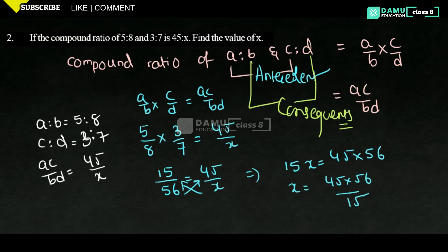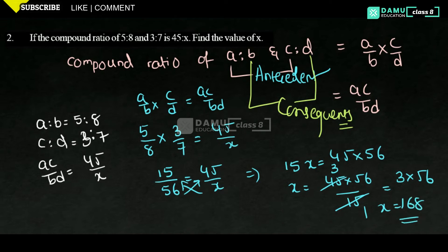Simplifying, 45 divided by 15 gives 3, so X equals 3 into 56, which equals 168. So X is 168 — that is the answer.